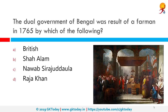The dual government of Bengal was a result of a Farman in 1765 by which ruler? It was by Shah Alam. This is the Treaty of Allahabad, signed on 16th August 1765 between Mughal Emperor Shah Alam and Lord Clive of the British East India Company after the Battle of Buxar in 1764. Based on the terms of the agreement, it granted Diwani rights to the East India Company.